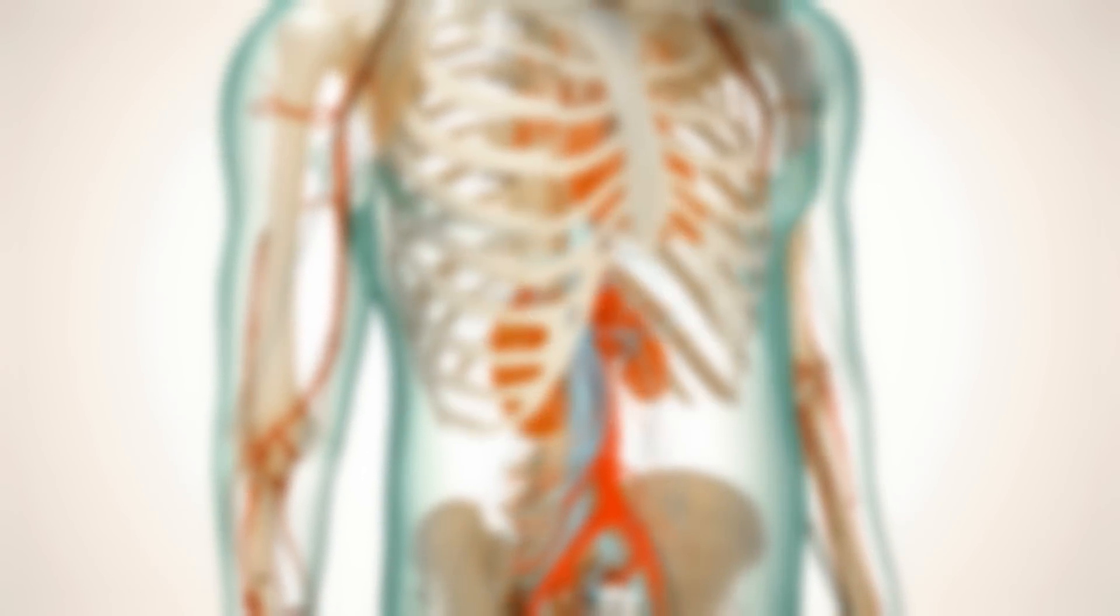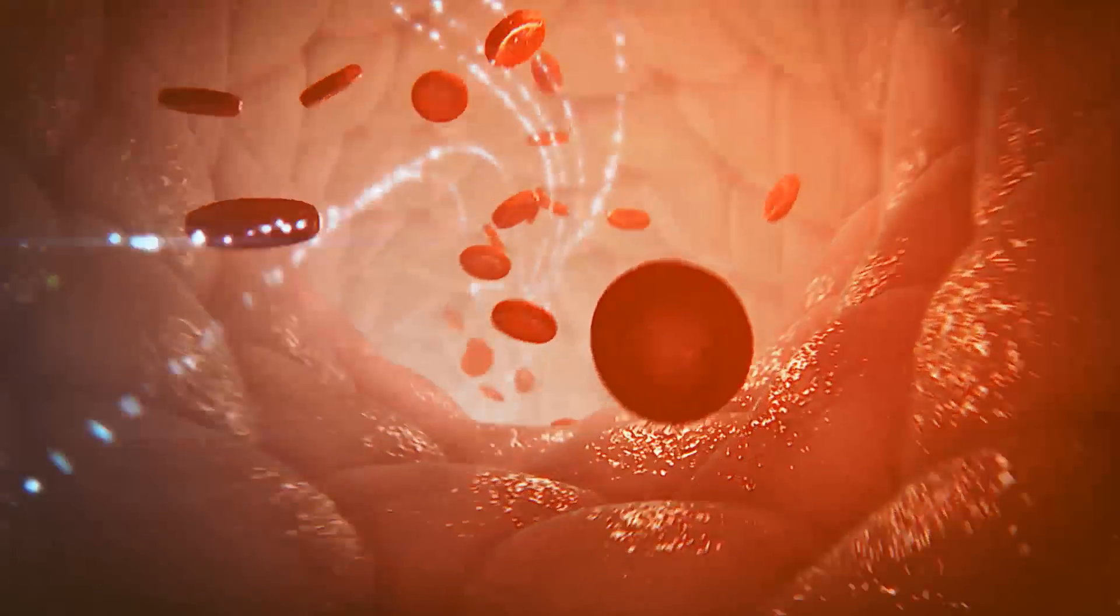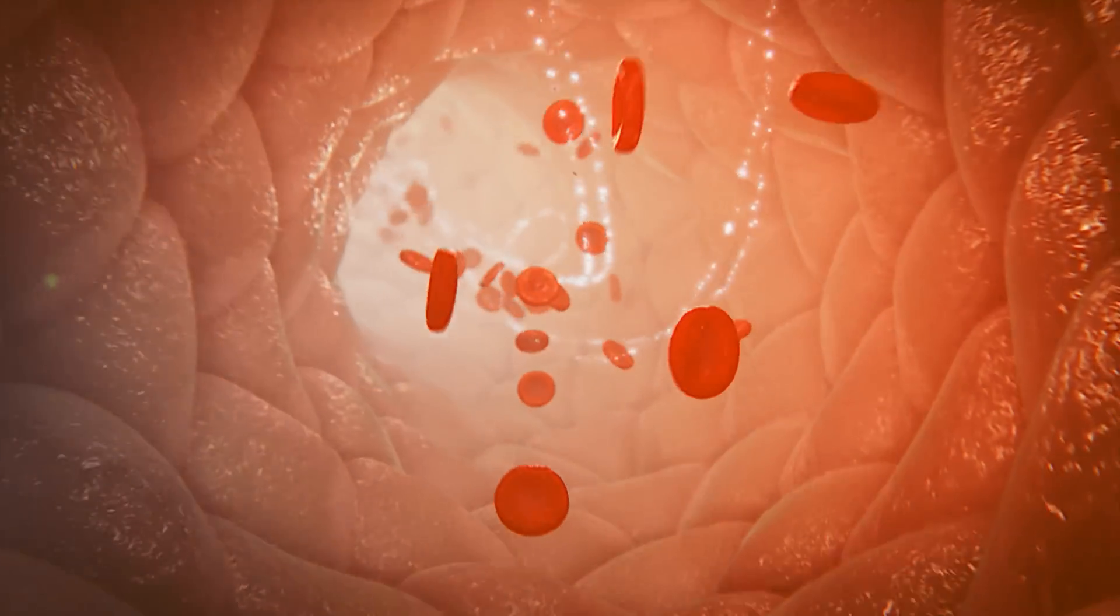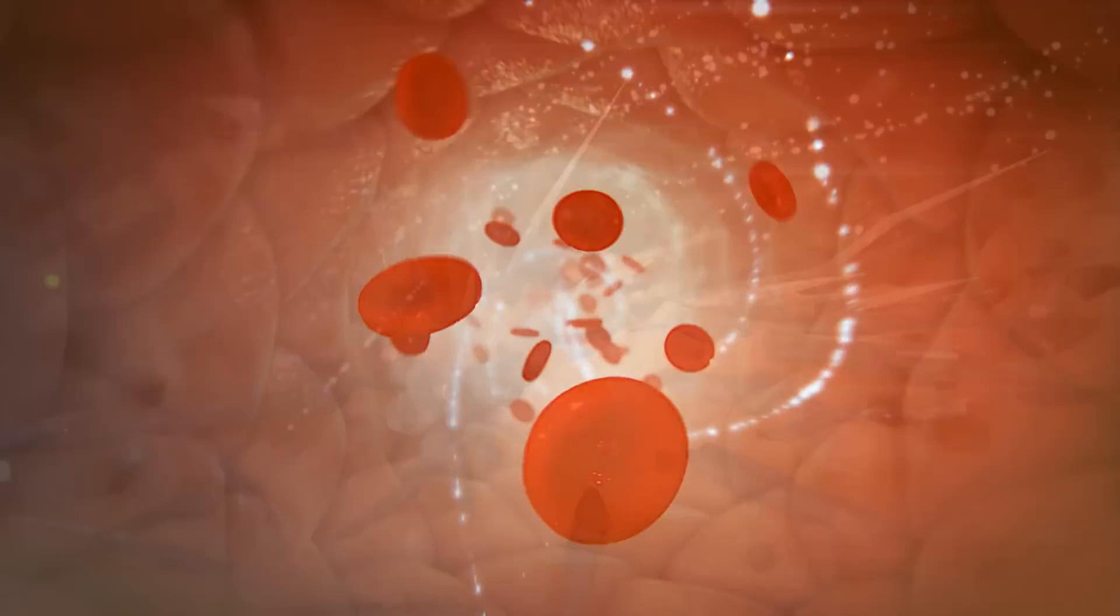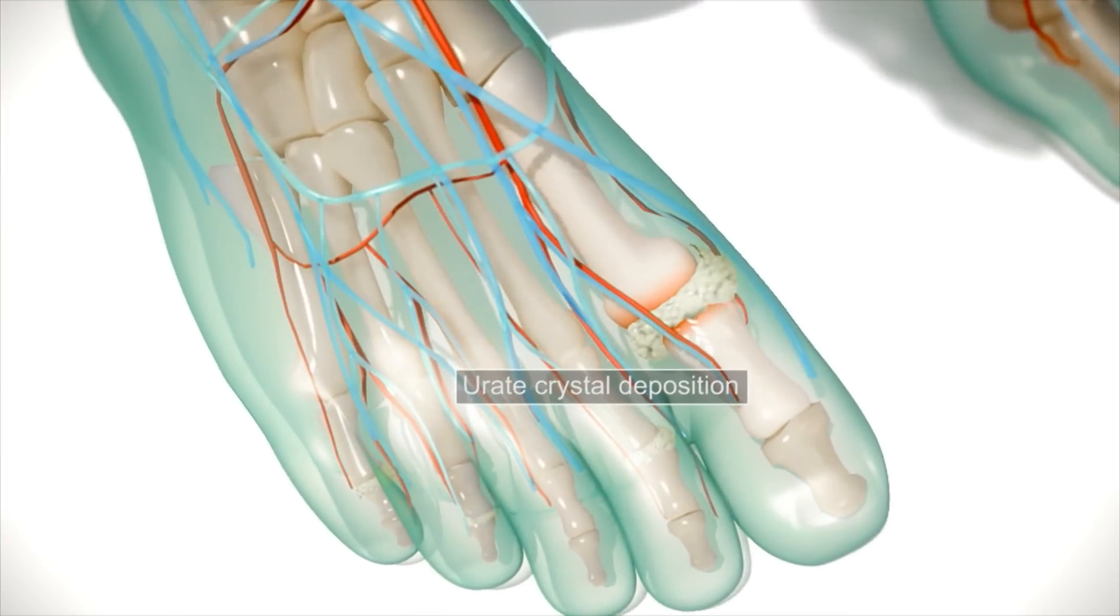In most patients, gout is caused by inefficient renal excretion of uric acid. Decreased excretion of uric acid leads to hyperuricemia, or elevated uric acid levels in the blood, causing urate crystal deposition in the joints, organs, and other connective tissues.